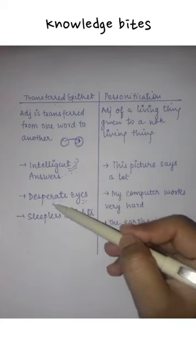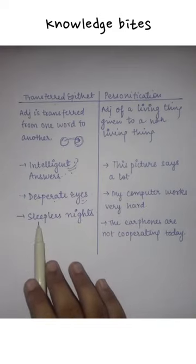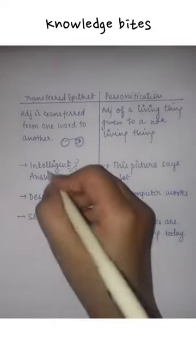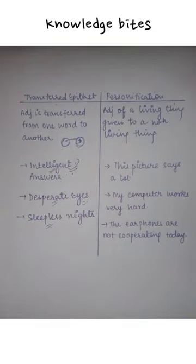Desperate eyes. Desperate means hopeless. Sleepless nights. Night is not sleepless, but the person is sleepless. But we have transferred our properties to another word. That is transferred epithet.